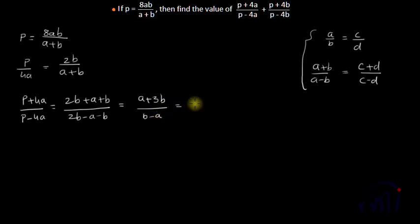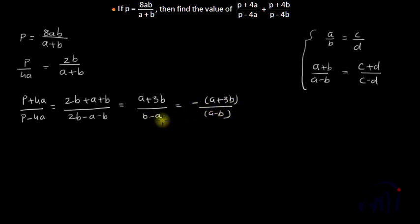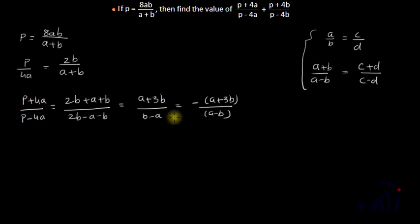Taking minus common from the denominator, this becomes -(a+3b)/(a-b). So the value of (p+4a)/(p-4a) is -(a+3b)/(a-b).